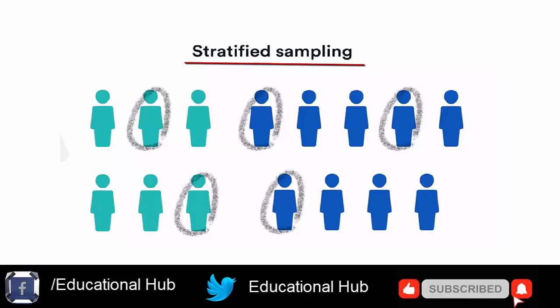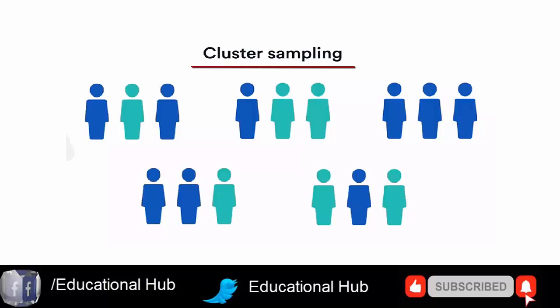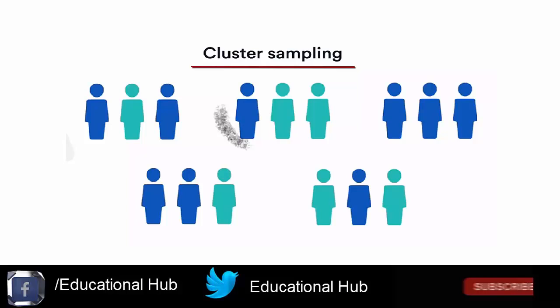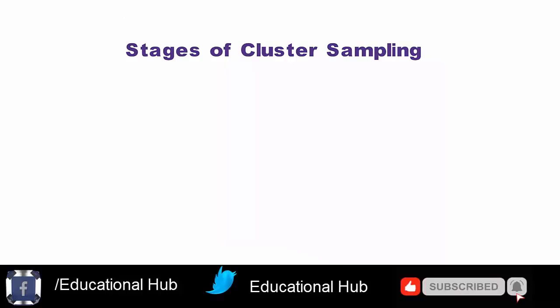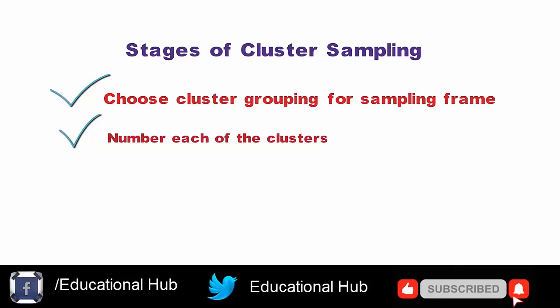4. Cluster sampling. Cluster sampling is where the whole population is divided into clusters or groups. Cluster sampling is advantageous for those researchers whose subjects are fragmented over large geographical areas, as it saves time and money. The stages to cluster sampling can be summarized as follows: 1. Choose cluster grouping for the sampling frame, such as type of company or geographical region. 2. Number each of the clusters. 3. Select sample using random sampling.